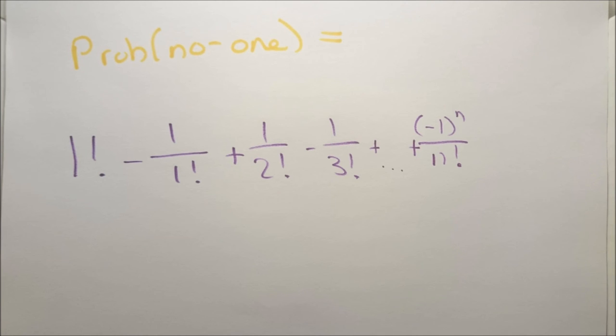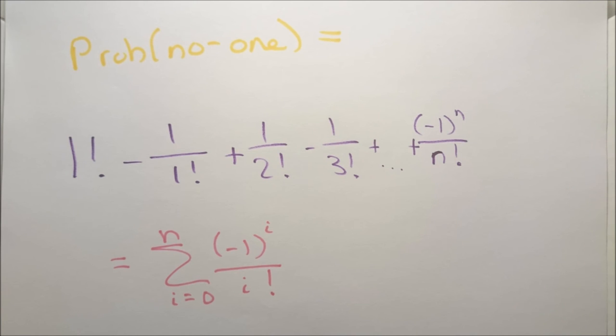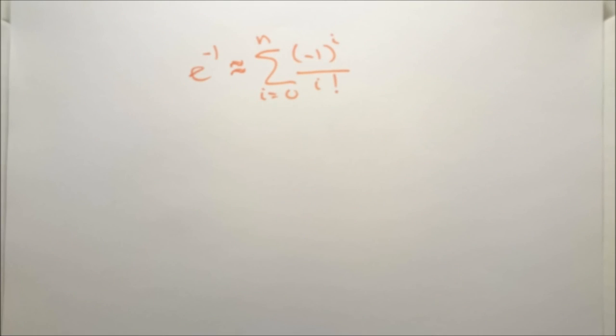Another way of saying this is the sum from i equals 0 to n of minus 1 to the i divided by i factorial. Remember from earlier that this is the particular version of Euler's constant, i.e. when x equals minus 1 so then this is e to the minus 1.